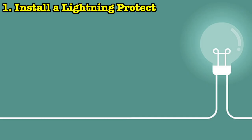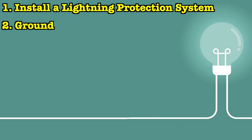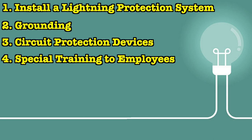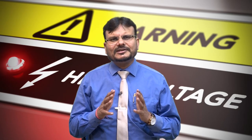Other tips to avoid electrical accidents include installing a lightning protection system, proper grounding, using circuit protection devices and providing special training to employees.